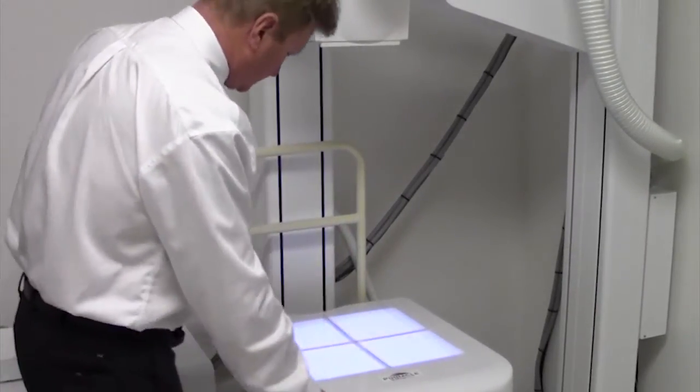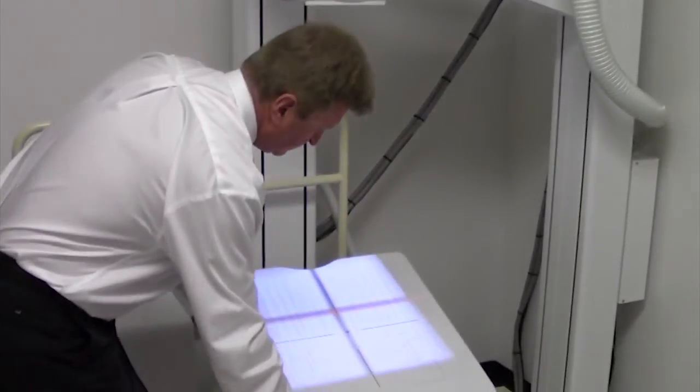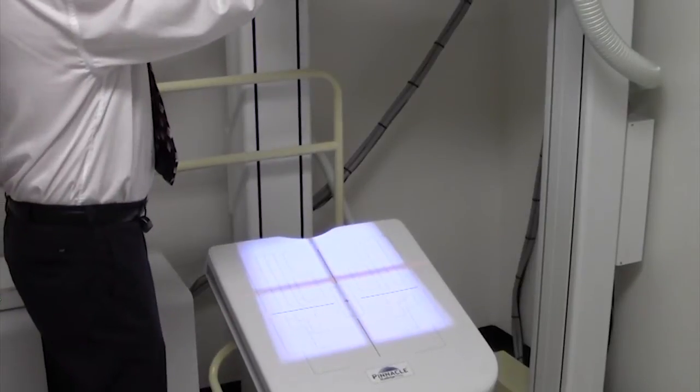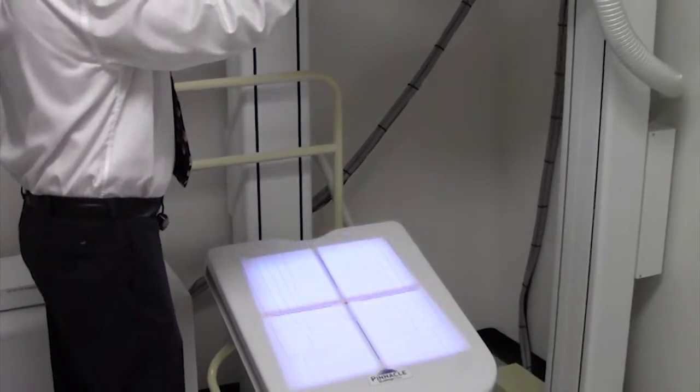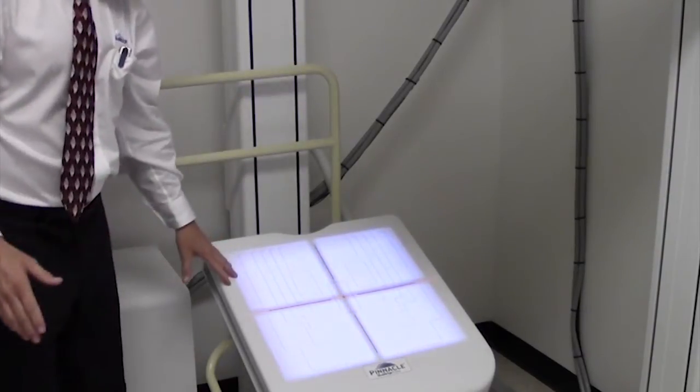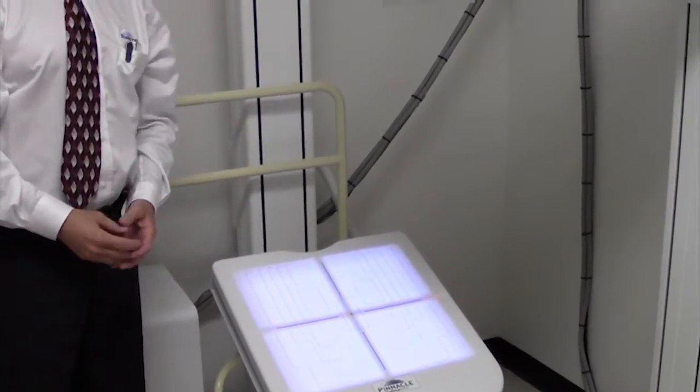For feet, you would have a patient seated, you would angle the wall stand the appropriate amount, depending on the patient, then you would rotate the tube stand independent from the wall stand to achieve the proper positioning.